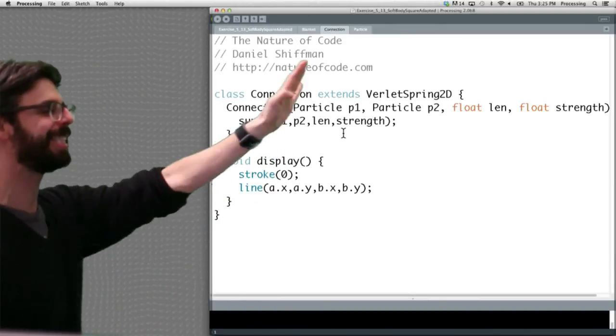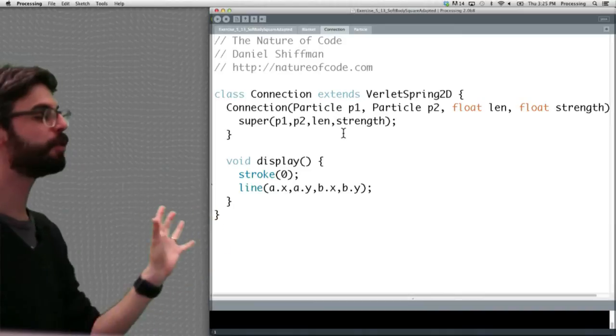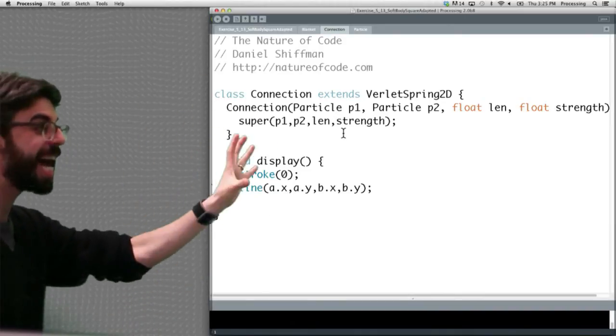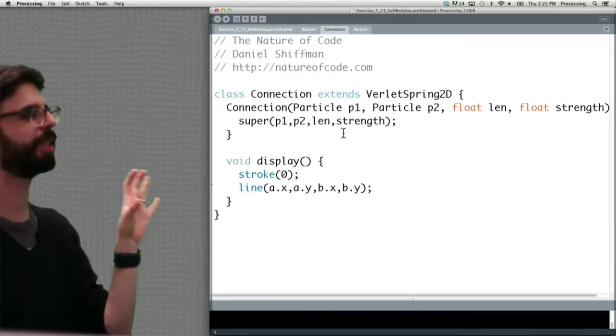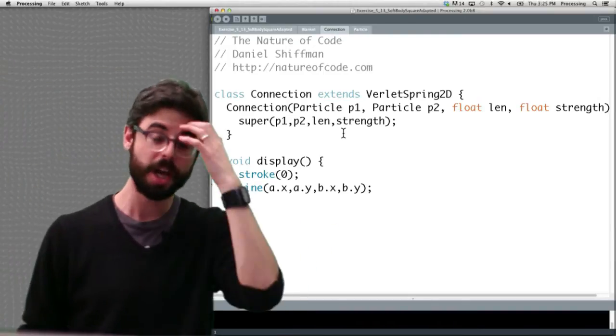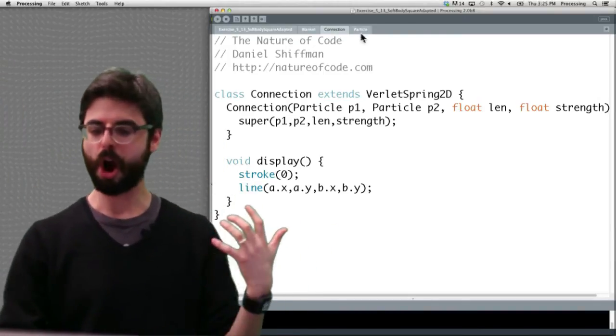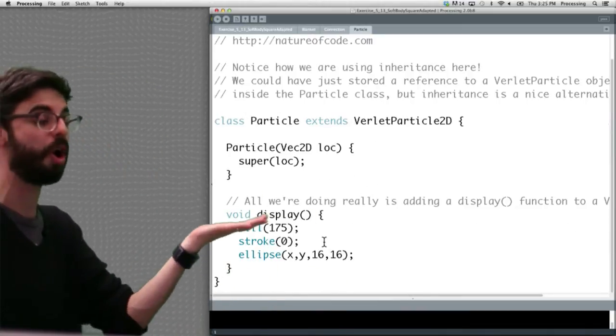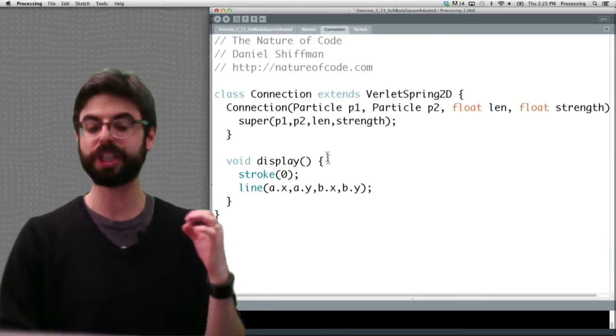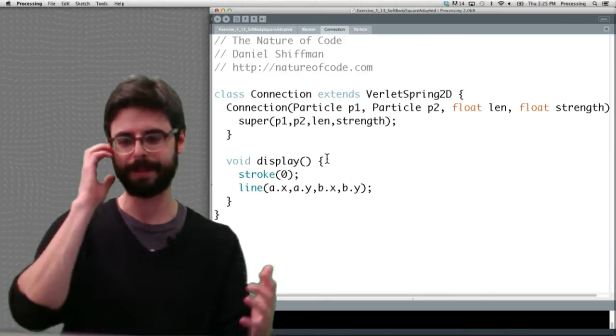Here we have our connection class that extends VerletSpring2D because I want to have a display method for those connections, which is just a line. Our particle extends VerletParticle. We're not drawing the particles—instead we're just displaying all the connections to see that mesh.